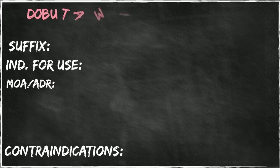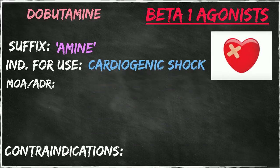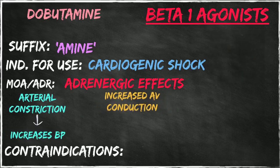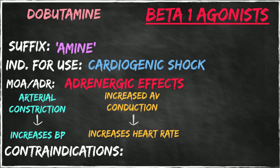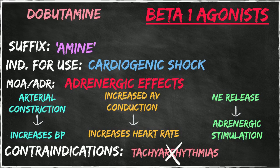Dobutamine is the prototype drug for the beta-1 agonist category. The suffix is -AMINE. This drug category is used for its adrenergic effects in patients with cardiogenic shock. Cardiac output is improved by the adrenergic effects caused by this drug category, including arterial constriction which increases blood pressure, and increased atrioventricular node conduction which increases the heart rate. The third benefit of dobutamine is stimulation of norepinephrine release that propagates the adrenergic process, further improving cardiac output. Patients who have chronic tachyarrhythmia should not receive this drug category due to the potential of causing new rhythm disturbances.